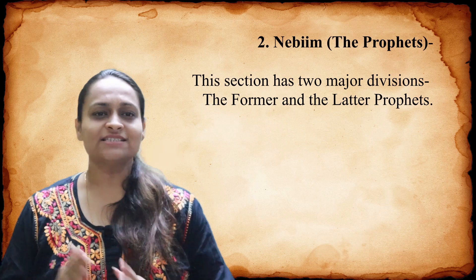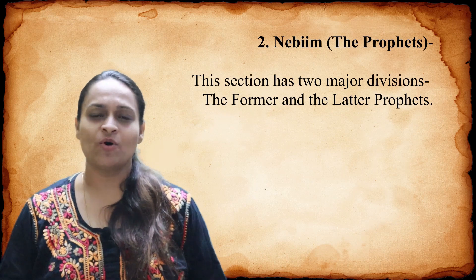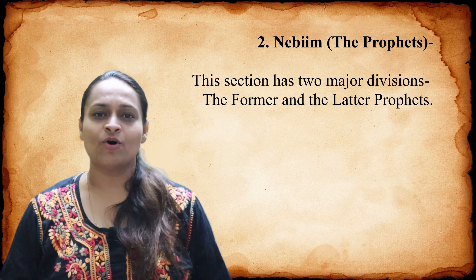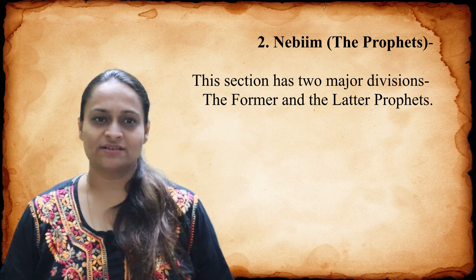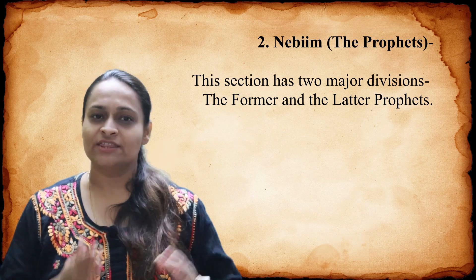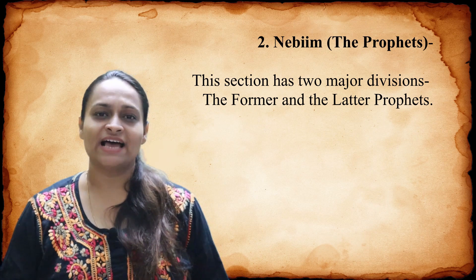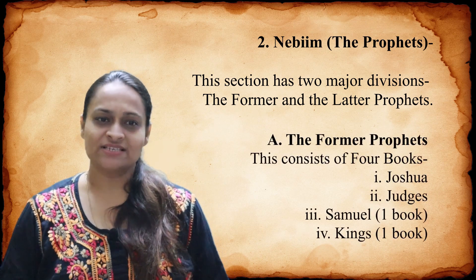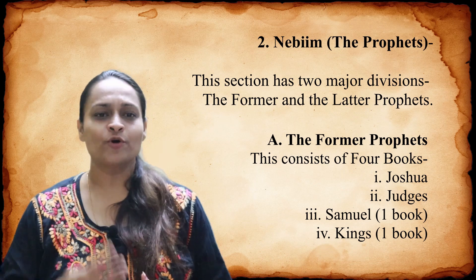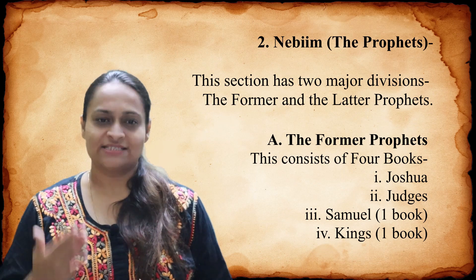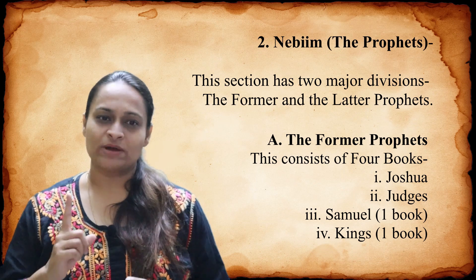The second section is the Nevi'im, which is the section of the prophets. This section has two major divisions: the former and the latter prophets. The former prophets consists of four books: Joshua, Judges, Samuel as one book, and Kings as one book.